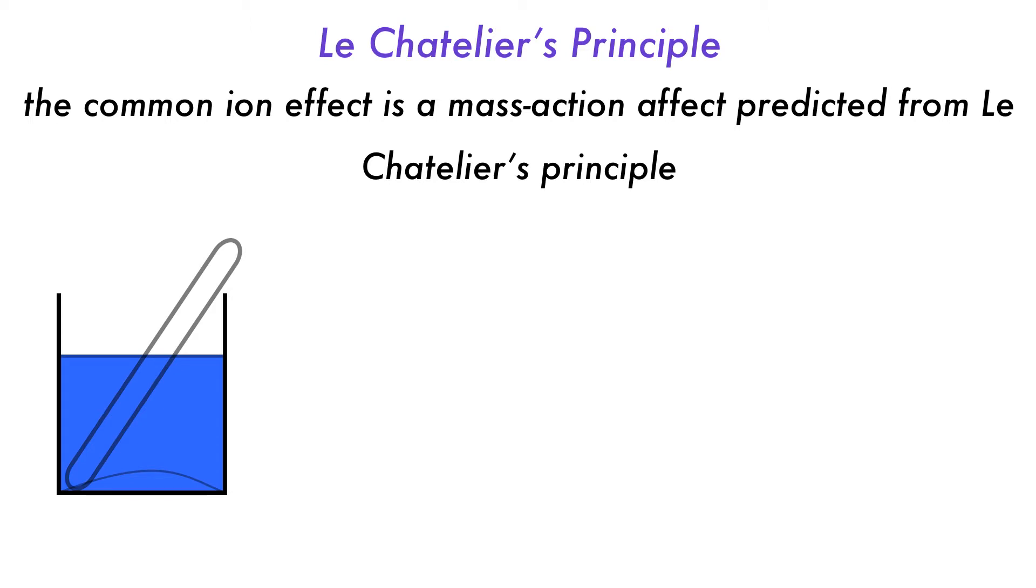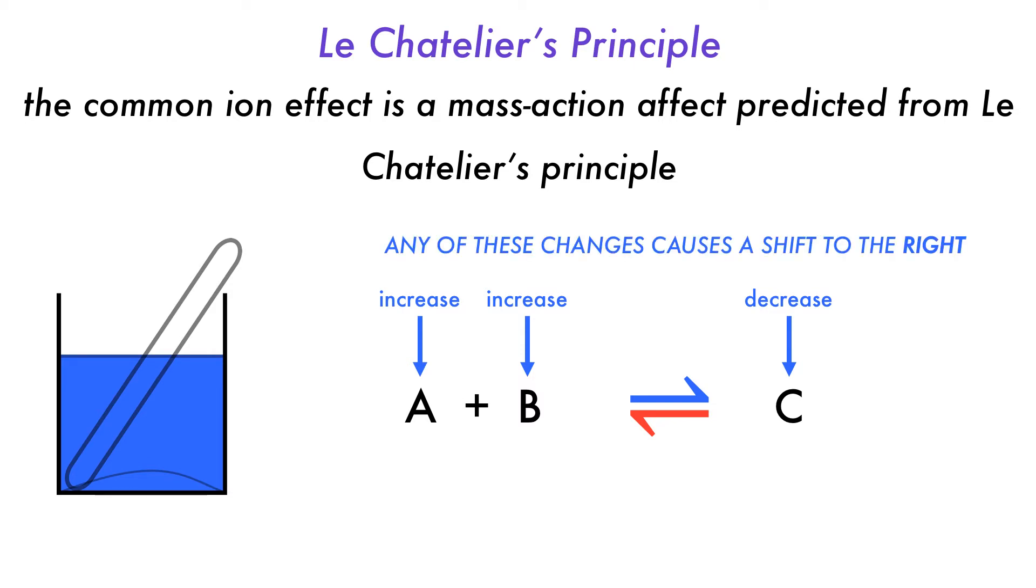For a detailed explanation, check out the Le Chatelier's principle video. If there is an equilibrium like so, an increase in the concentration of A or B, or a decrease in the concentration of C, will cause the equilibrium to shift to the right. Conversely, if the concentrations of A or B are decreased, or the concentration of C is increased, the equilibrium will shift to the left. This is a short summary of Le Chatelier's principle.